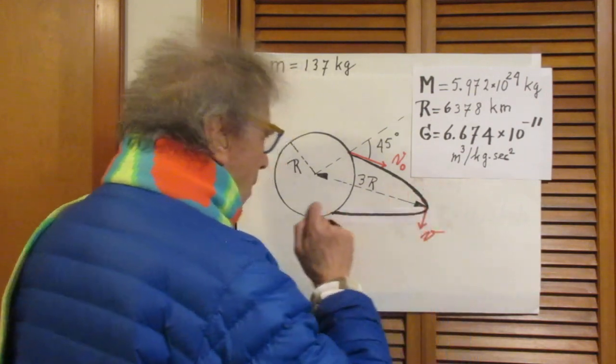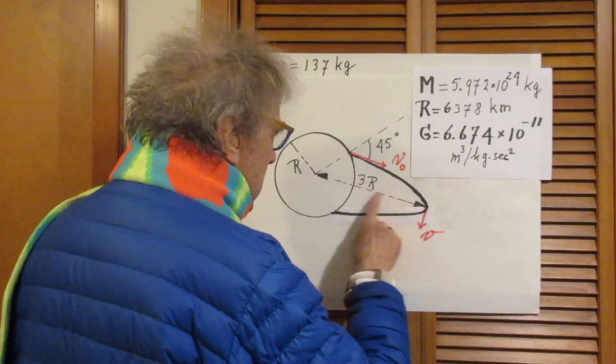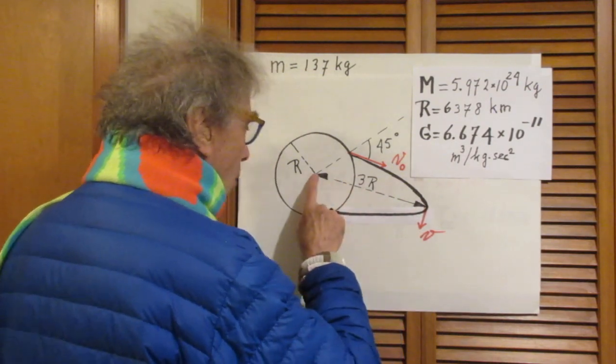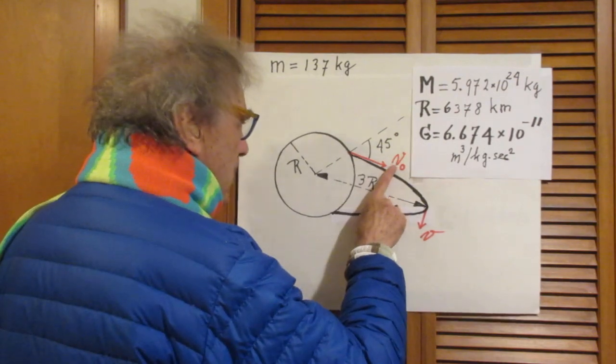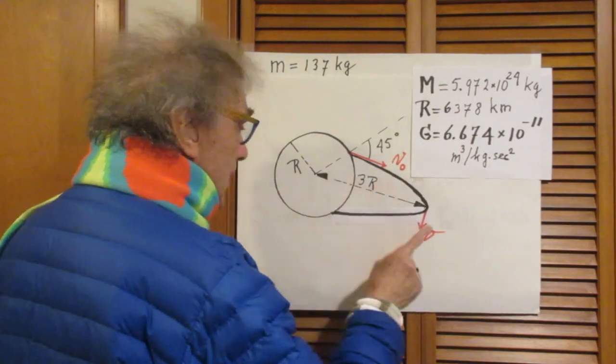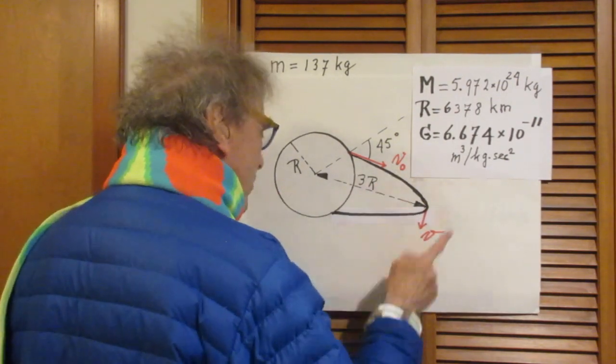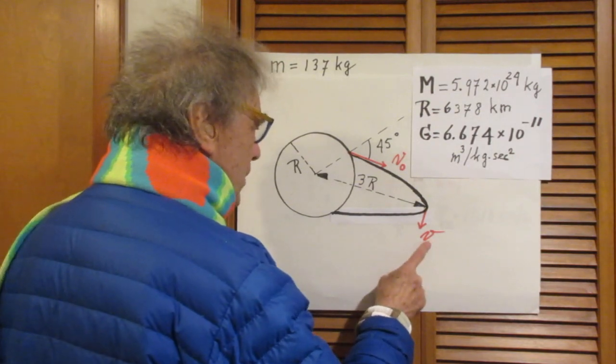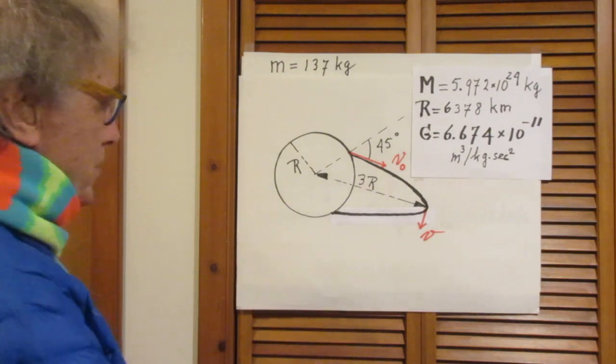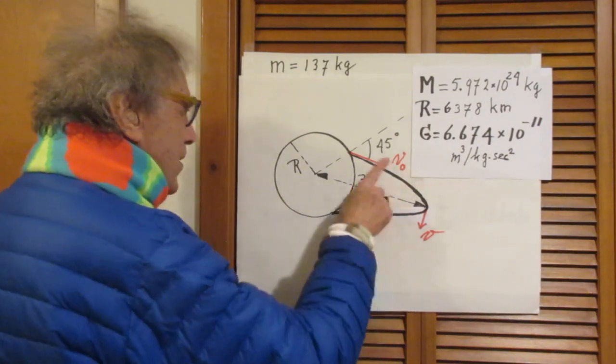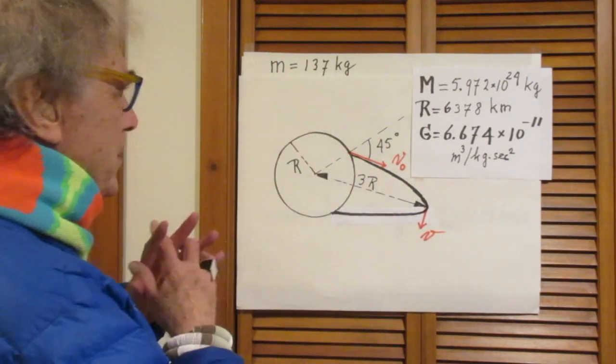The question now is, if apogee is at three radii from the center of the Earth, what was the speed v0 that I used? And by the way, once you have that, it's trivial, of course, to also find the speed v. And vice versa. If you know this speed v, you can also easily find v0.